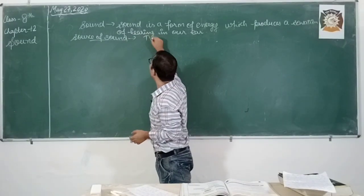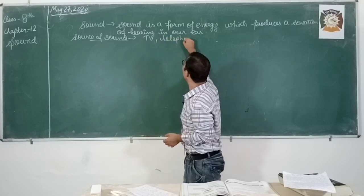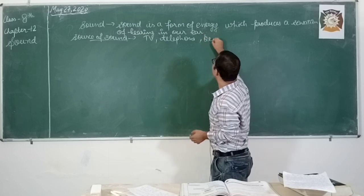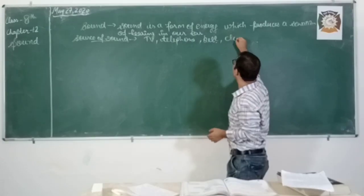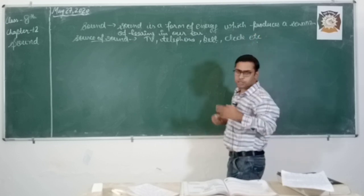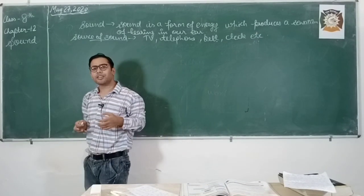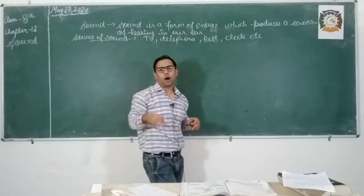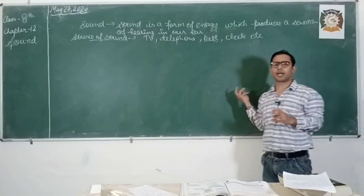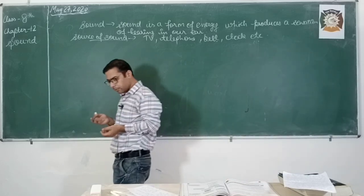For example: television, telephone, bell, clock, alarm clock, and radio. There are a large number of examples of sources of sound. So those objects which produce sound are known as the source of sound.